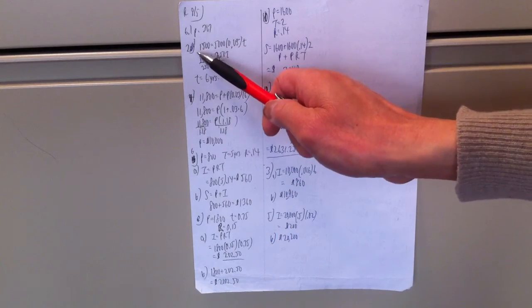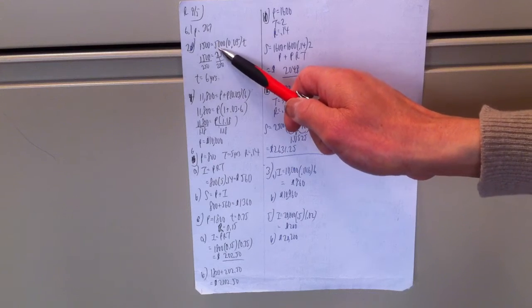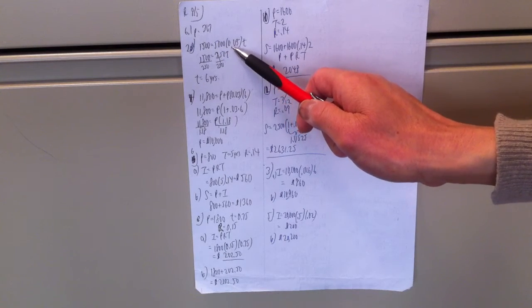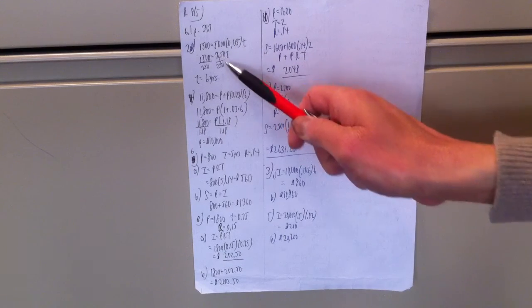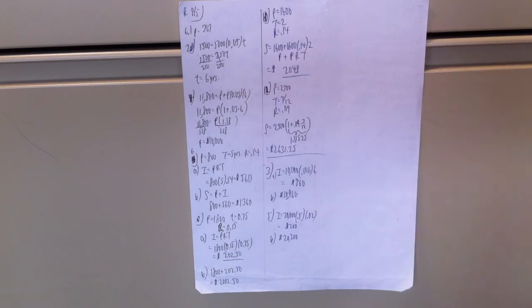Interest was 1500, equals 5000 principal times 0.05 interest rate times time. Multiply 5000 by 0.05, comes out to be 250t. Divide both sides by 250, and t is equal to 6 years. Time is always in years.